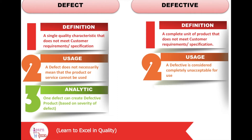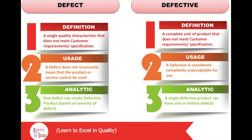Whereas a single defective product can have one or millions of defects. For example, a product with a hundred different scratches, twenty different surface mount components not soldered properly, and incorrect text on a label at four different places can be considered as defective.